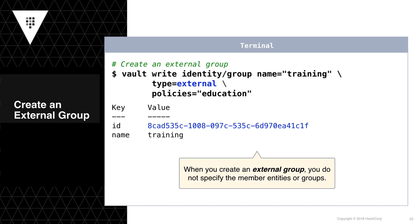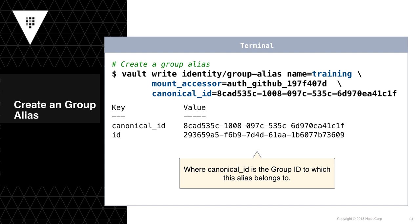Next, let's create an external group by running the command 'vault write' against the endpoint identity/group, specifying the name of the group, but this time setting its type to external and attaching any applicable policies. When creating an external group, you do not specify the member entities or groups at time of creation. Finally, we create a group alias to connect the external group to our third-party authentication provider, in this case GitHub, by invoking the command 'vault write' against the endpoint identity/group-alias, specifying the group alias name, the mount accessor to the GitHub auth method, and the canonical ID to the external group ID.